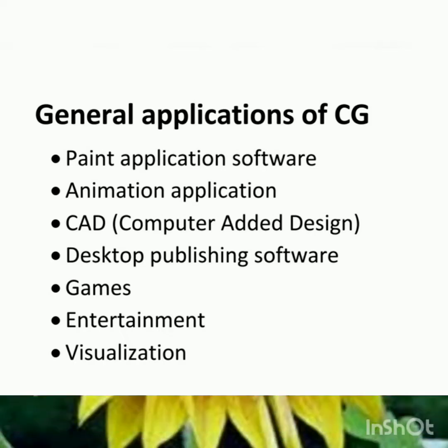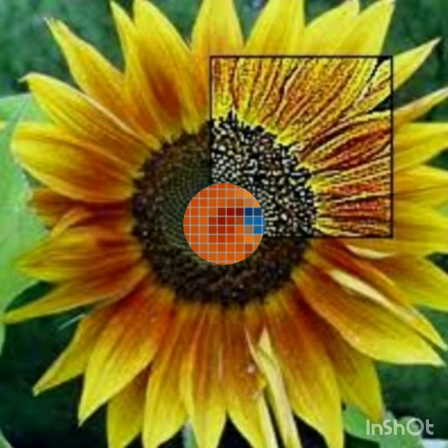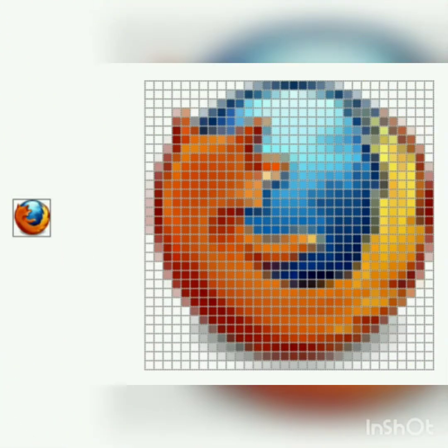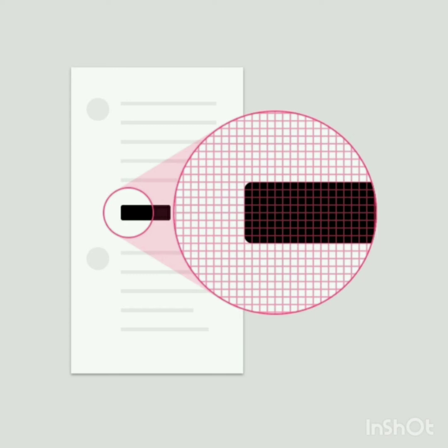We just heard that computer graphics is made up of numbers of pixels. Then, what is pixel? The graphical monitors display pictures by dividing the display screen into number of pixels. If we consider any picture and zoom in, then we can see the tiny dots, which are also called as pixels.